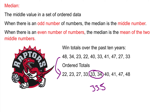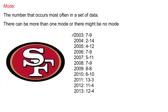Finally, mode. What better way to show mode than the win totals since 2003 for the San Francisco 49ers. Mode is the number that occurs the most often in a set of data. There can be more than one mode, and there might be no mode. If all numbers are unique, there's no mode. This is the number that occurs most often in a set of data.